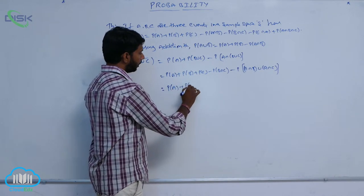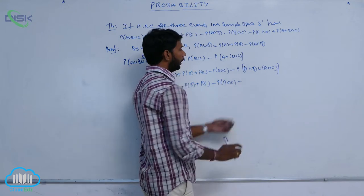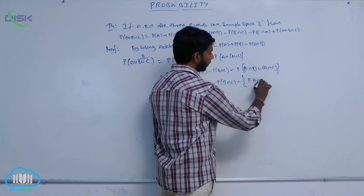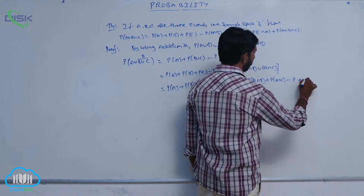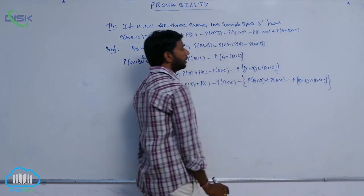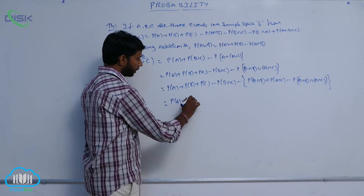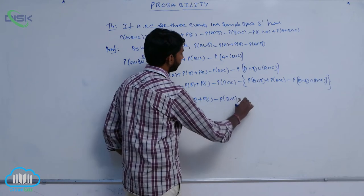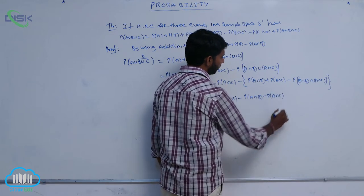That is equal to P of A plus P of B plus P of C minus P of B intersection C. Again, this term P of A intersection B union A intersection C is of the form P of A union B. Apply the addition theorem: P of A intersection B union A intersection C equals P of A intersection B plus P of A intersection C minus P of A intersection B intersection A intersection C. So we get P of A plus P of B plus P of C minus P of B intersection C minus P of A intersection B minus P of A intersection C.